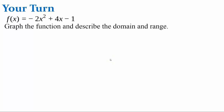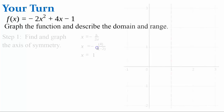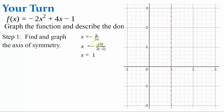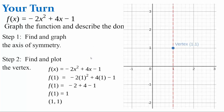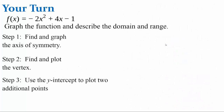Your turn — here's a function. Graph it and then describe the domain and range. Pause the video and come back when ready. Step 1: find and graph the axis of symmetry. Evaluating x equals negative b over 2a with b = 4 and a = negative 2, we get an axis of symmetry of x equals 1. Step 2: find and plot the vertex. Substituting x = 1 into the function, the output is 1, so the vertex is (1, 1).